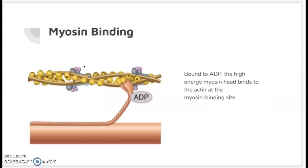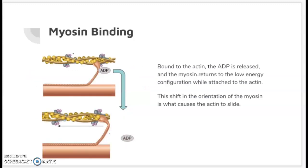While the myosin is bound to the ADP, it is able to bind to the myosin binding site on the actin, which — as we mentioned in the previous lesson — is exposed due to calcium binding to the troponin complex. While the myosin is bound to the actin, it releases the ADP, causing it to change shape from high energy configuration to low energy configuration. This shift in shape causes the actin to slide over.